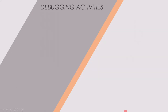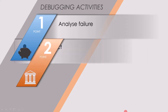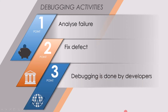Now let's have a look into the debugging activities. The most important activity of debugging is to analyze failure. Once the defect is analyzed and the root cause is found, the next activity is to fix the defect. And the last point is that debugging is done by developers.